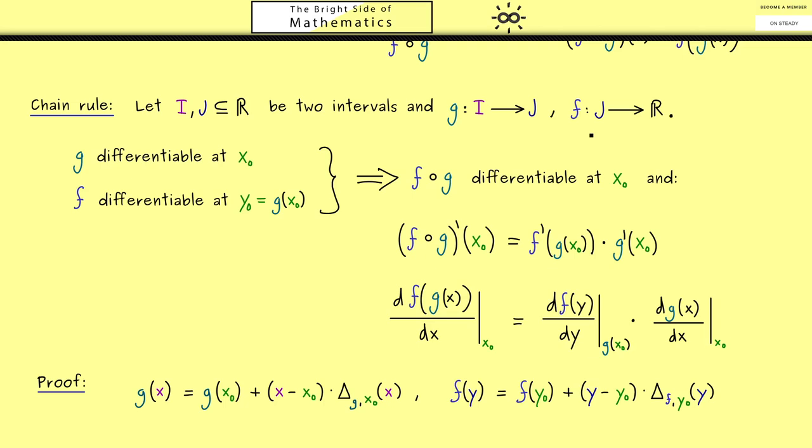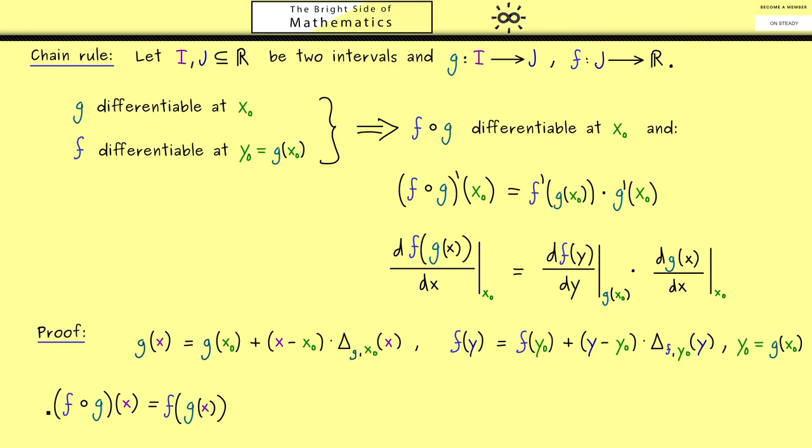For this please don't forget y₀ is given by g(x₀). So there we have everything and we can put it together. So let's look at the composition at the given point x. Now the first thing you should see is that this g(x) is a point y in the interval J. Or in other words we simply can use this formula we have for f. The only thing we change is that y is now g(x).